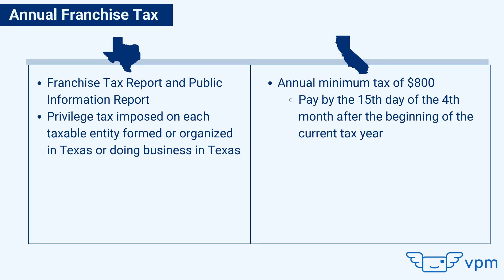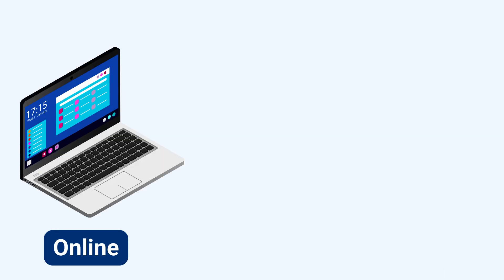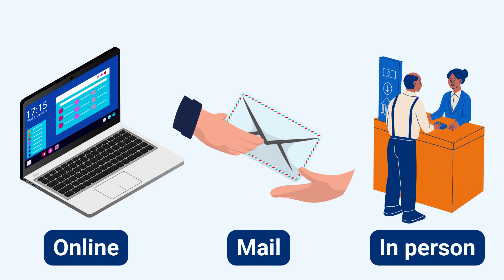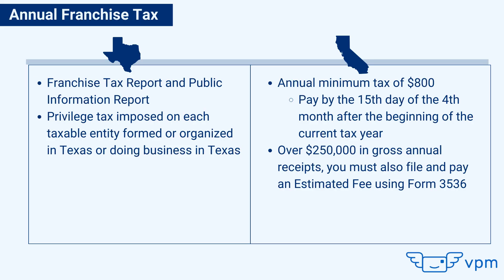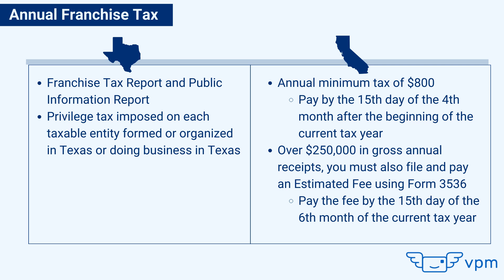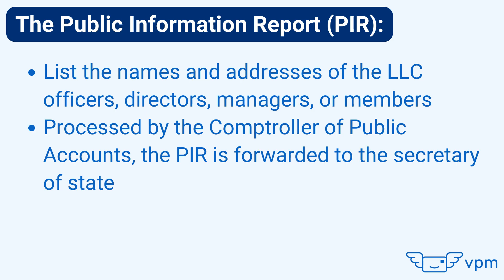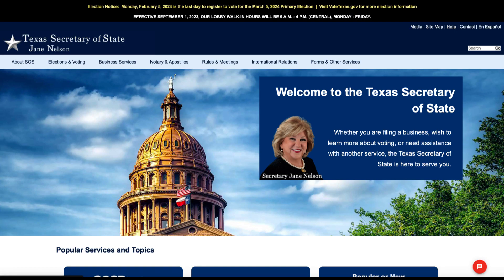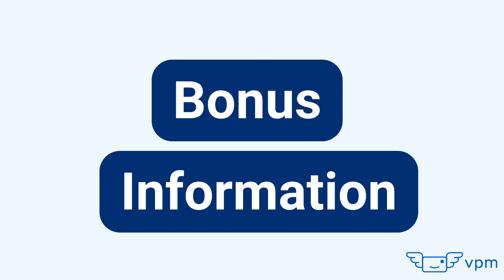In California, all LLCs regardless of total revenue or activity must pay an annual minimum tax of $800, due by the 15th day of the fourth month after the beginning of the current tax year. You can pay online, by mail, or in person at California Franchise Tax Board field offices. If your California LLC will have over $250,000 in gross annual receipts or total revenue, you must also file and pay an estimated fee using Form 3536, due by the 15th day of the sixth month of the current tax year.